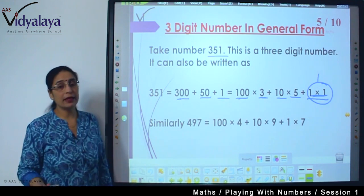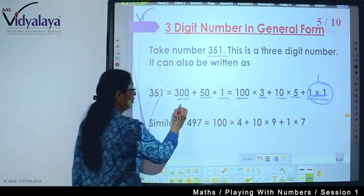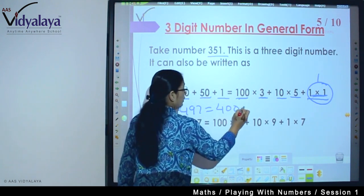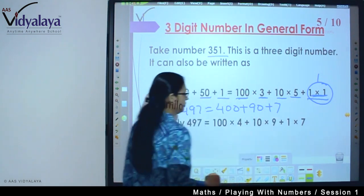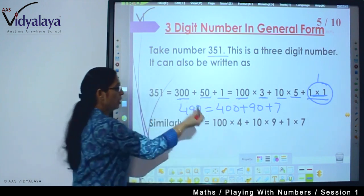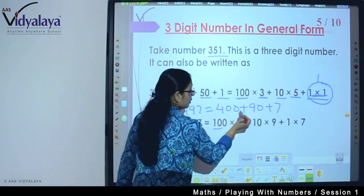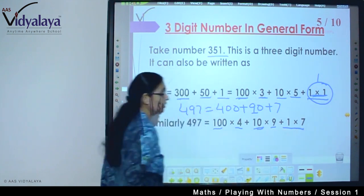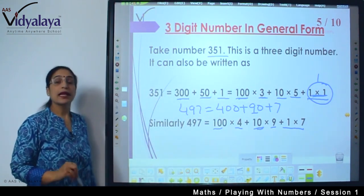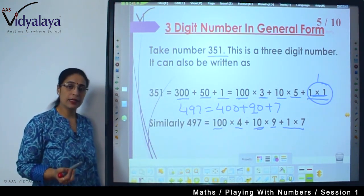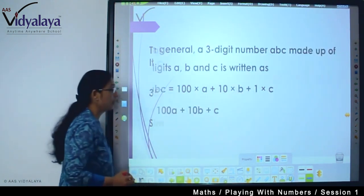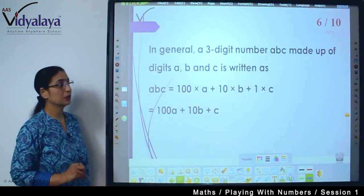Similarly four hundred ninety seven you can write. So 497, first we can write like 400 plus 90 plus 7. So hundred into 4, 9's place value is 10, ten into 9 plus one into 7. Any difficulty? No? Yes, so you will find it is not that difficult and easily you can do it.